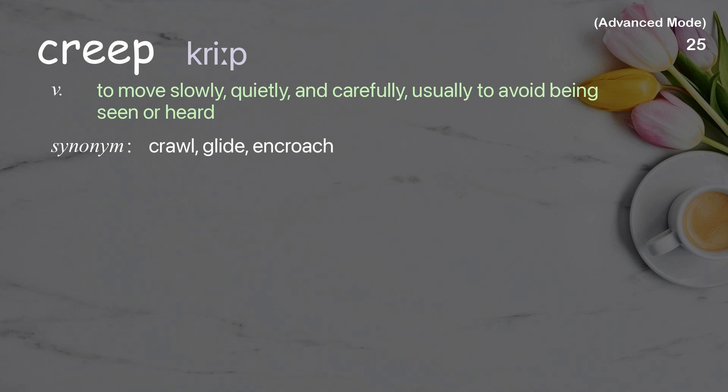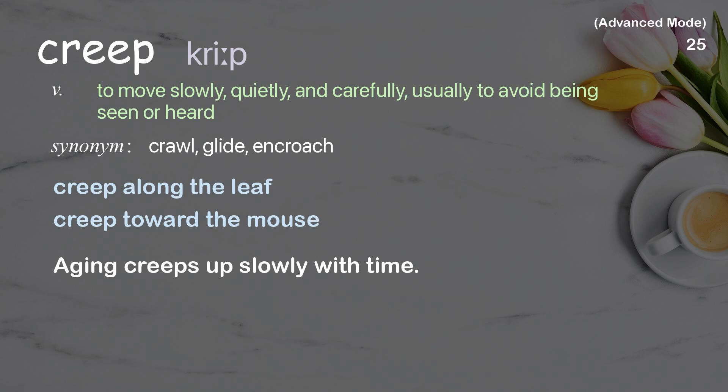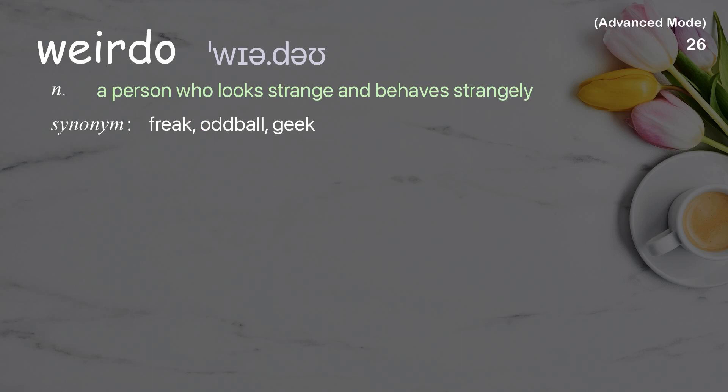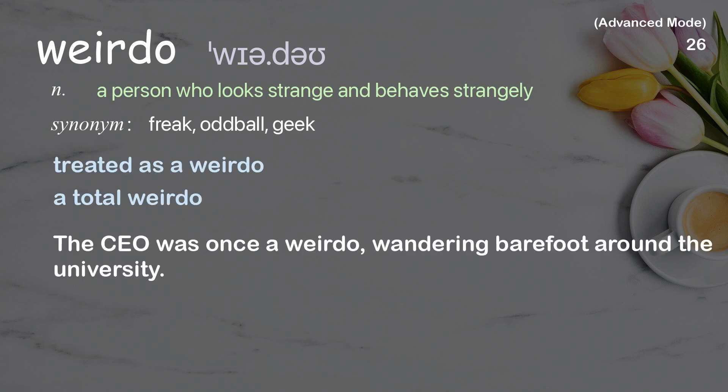Creep: To move slowly, quietly, and carefully, usually to avoid being seen or heard. Examples: Creep along the leaf. Creep toward the mouse. Aging creeps up slowly with time. Weirdo: A person who looks strange and behaves strangely. Examples: Treated as a weirdo. A total weirdo. The CEO was once a weirdo, wandering barefoot around the university.